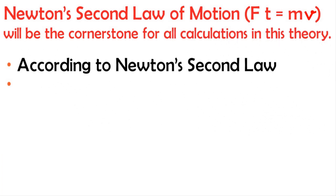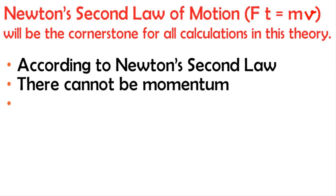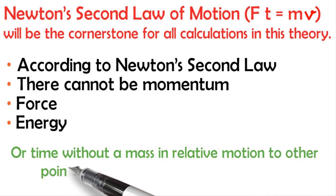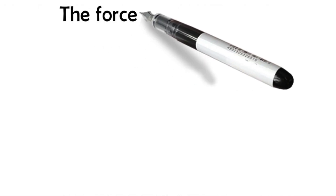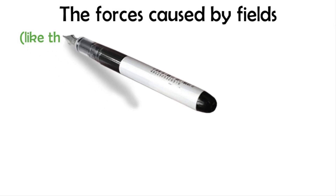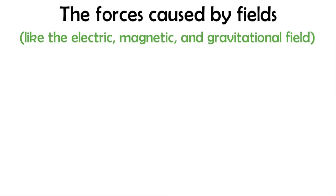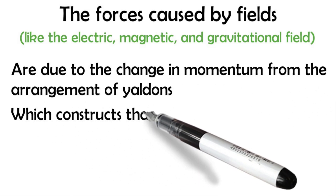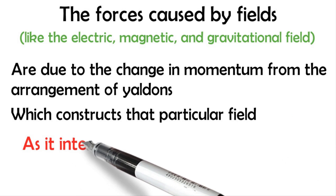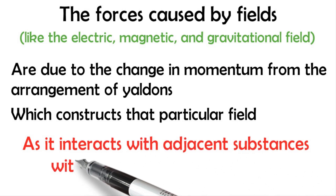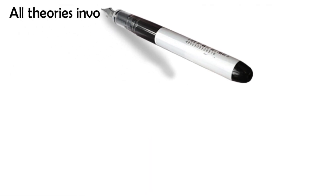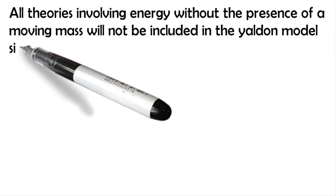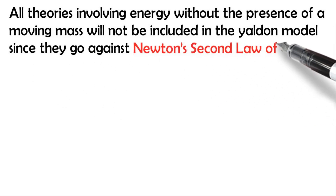According to Newton's second law, there cannot be momentum, force, energy, or time without a mass in relative motion to other points of reference in a bounded system. The forces caused by fields, like electric, magnetic, and gravitational field, are due to the change in momentum from the arrangement of Yaldons which constructs that particular field as it interacts with adjacent substances within a certain amount of time. All theories involving energy without the presence of a moving mass will not be included in the Yaldon model, since they go against Newton's second law of motion.